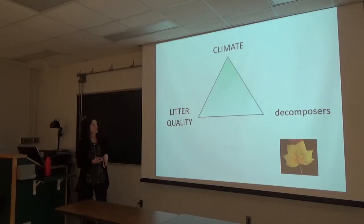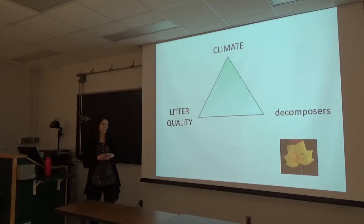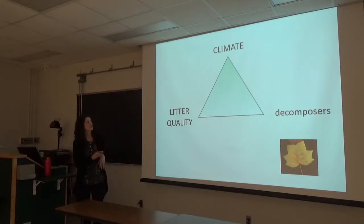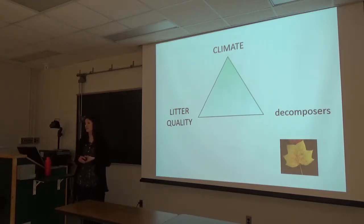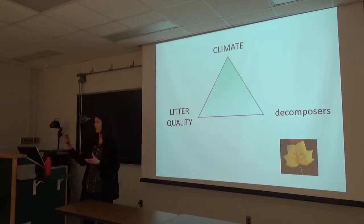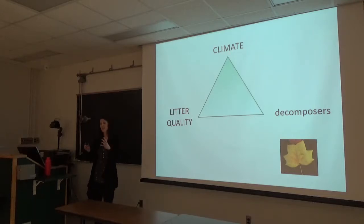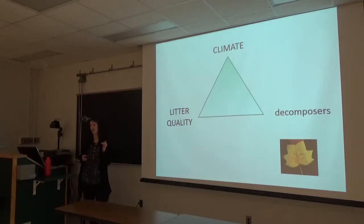This triangular relationship was first proposed in the 70s by Meentemeyer and has really stuck around since then. At large geographic scales, climate is the primary driver of decomposition patterns—if it's warmer, we see faster decomposition than at a cold site. But within a climate zone, litter quality would be the primary driver, followed by decomposers.